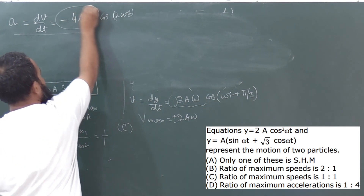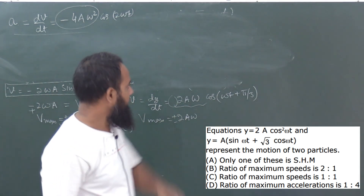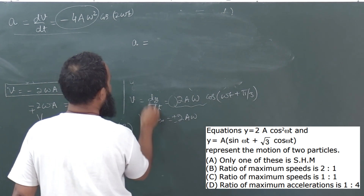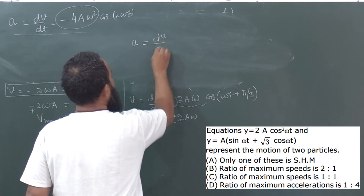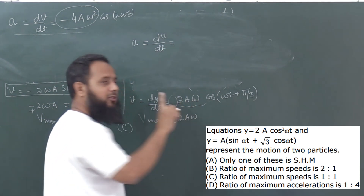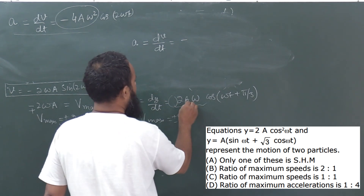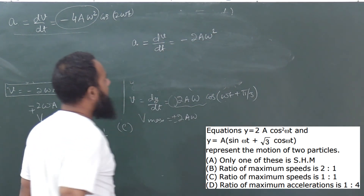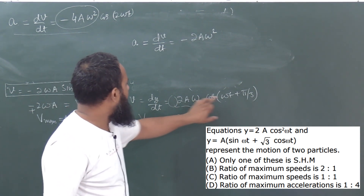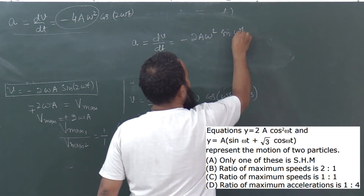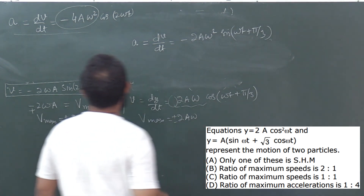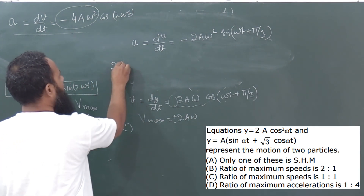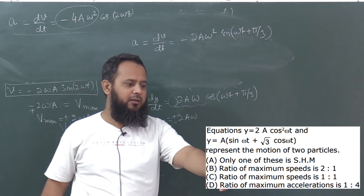For particle two, velocity is v = 2aω cos(ωt + π/3), so acceleration a₂ = dv/dt = -2aω² sin(ωt + π/3). The maximum acceleration of particle two is 2aω². So the ratio of maximum accelerations is: A₁_max : A₂_max = 4aω² : 2aω² = 2:1.